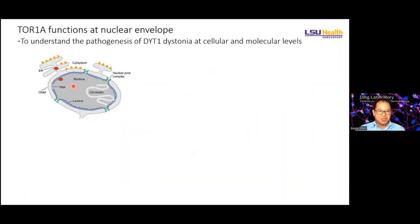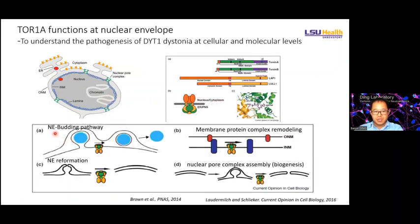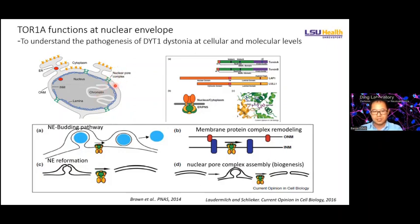The TOR1A gene protein, under physiological conditions, is localized in the ER membrane and in the nuclear membrane. It plays an important role together with cofactors in the nuclear envelope body — basically how mRNAs and proteins communicate between the nucleus and cytoplasm via cross-nuclear membrane transport. TOR1A protein plays an important role in controlling this transport. The hypothesis is that it is involved in modeling the nuclear envelope, nuclear membrane protein remodeling, and even nuclear pore complex biogenesis, which is the gate of transport.